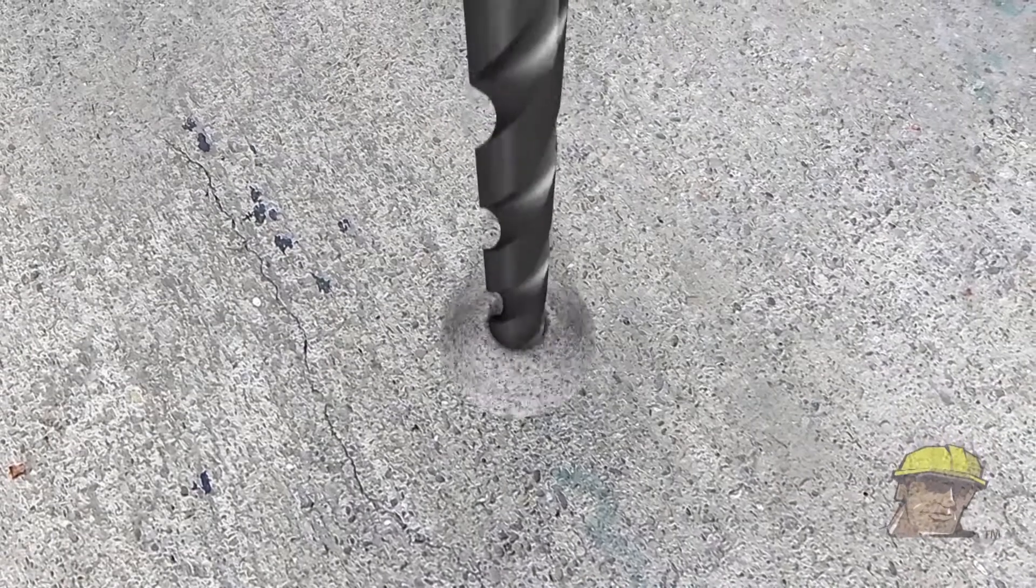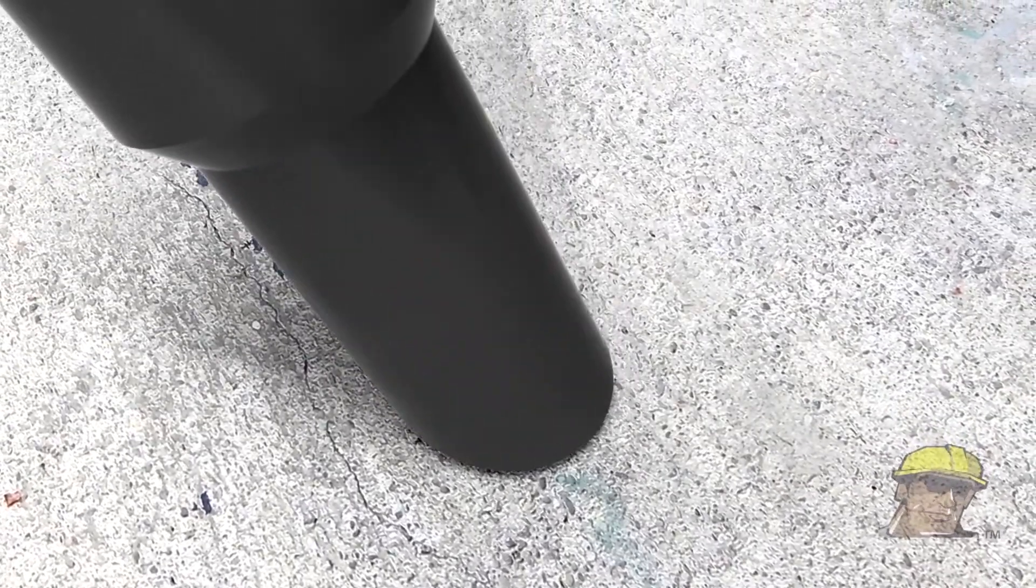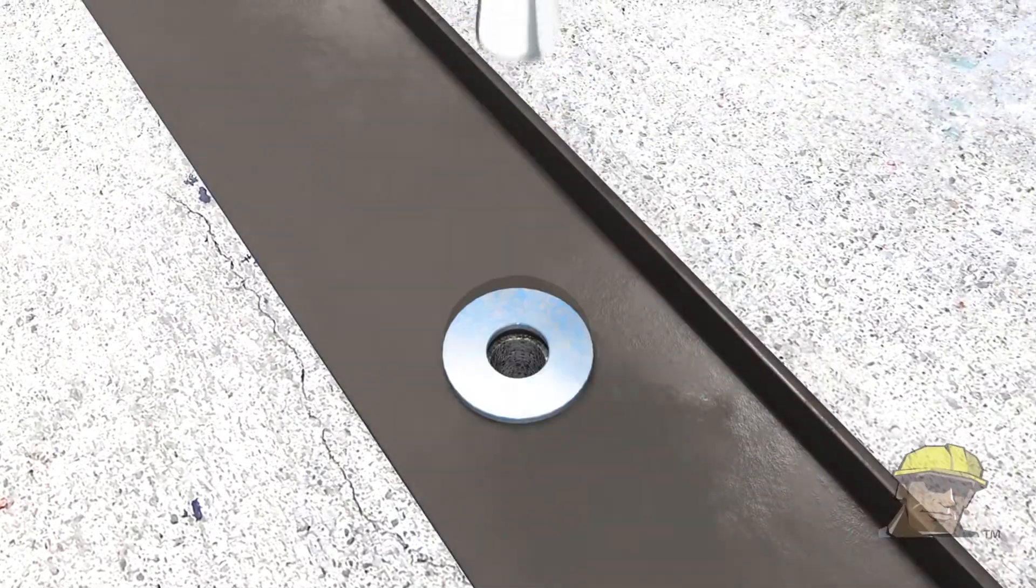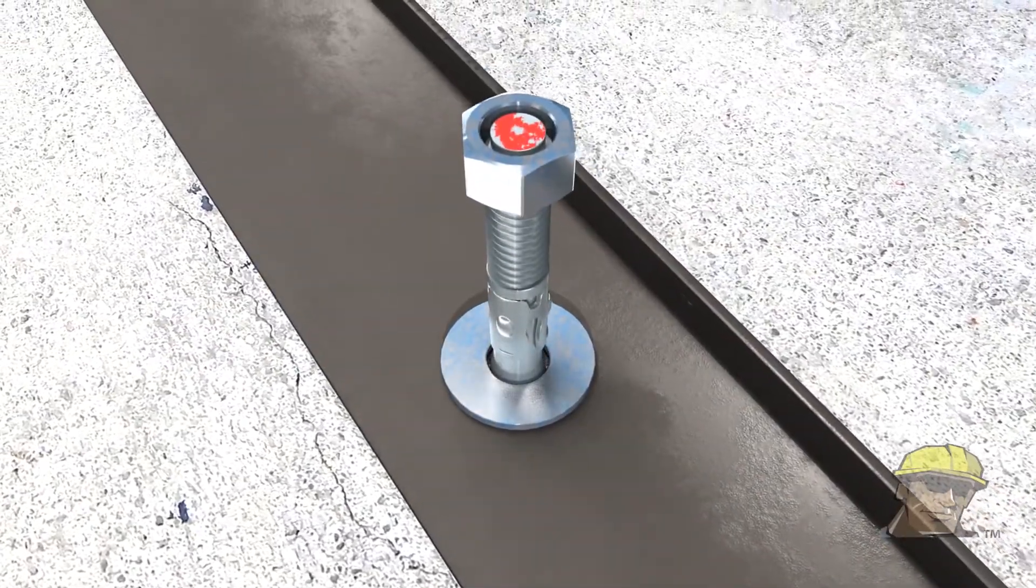First, the hole is pre-drilled to the diameter of the blue wedge anchor. Once drilled, clear the hole of all dust and debris with a shop vac. Insert the anchor into the hole with the washer and nut positioned as shown.